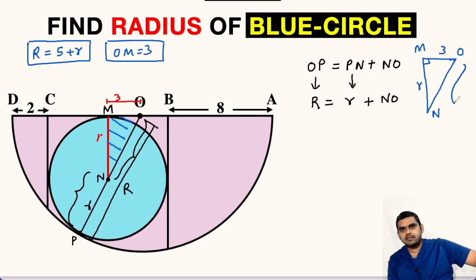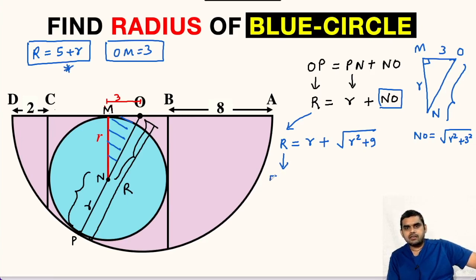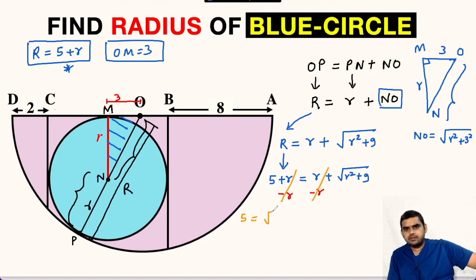Using the Pythagorean theorem we can find distance NO. NO = square root of (r squared + 9). Now substituting into capital R = r + NO, we get capital R = r + square root of (r squared + 9). Using the relationship R = 5 + r, we substitute: 5 + r = r + square root of (r squared + 9). Subtracting r from both sides gives 5 = square root of (r squared + 9). Squaring both sides: 25 = r squared + 9.